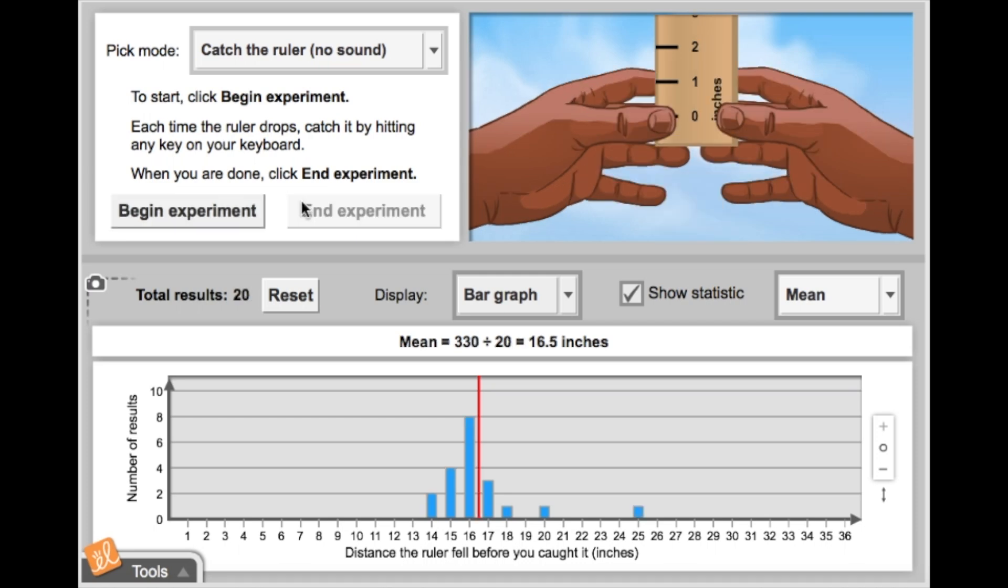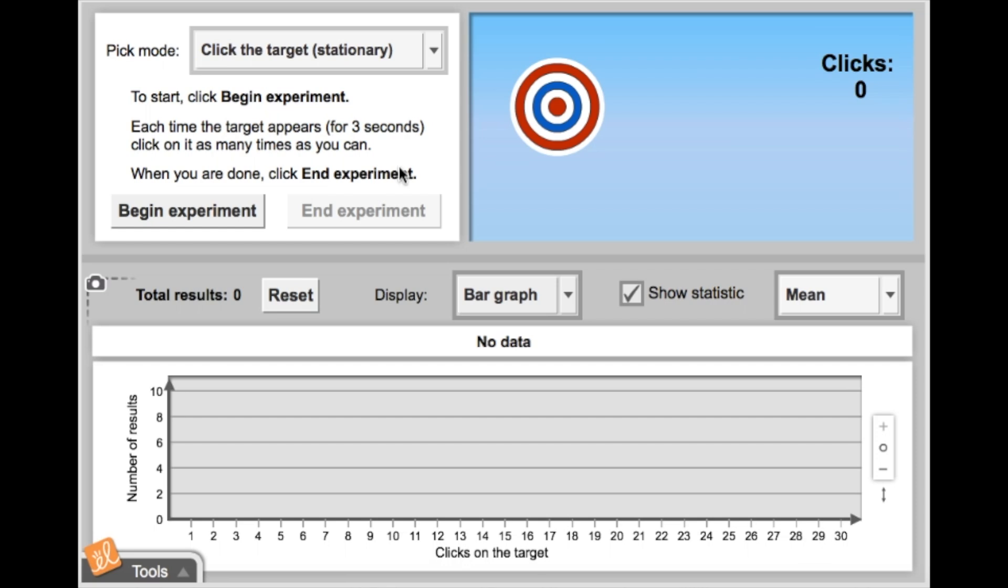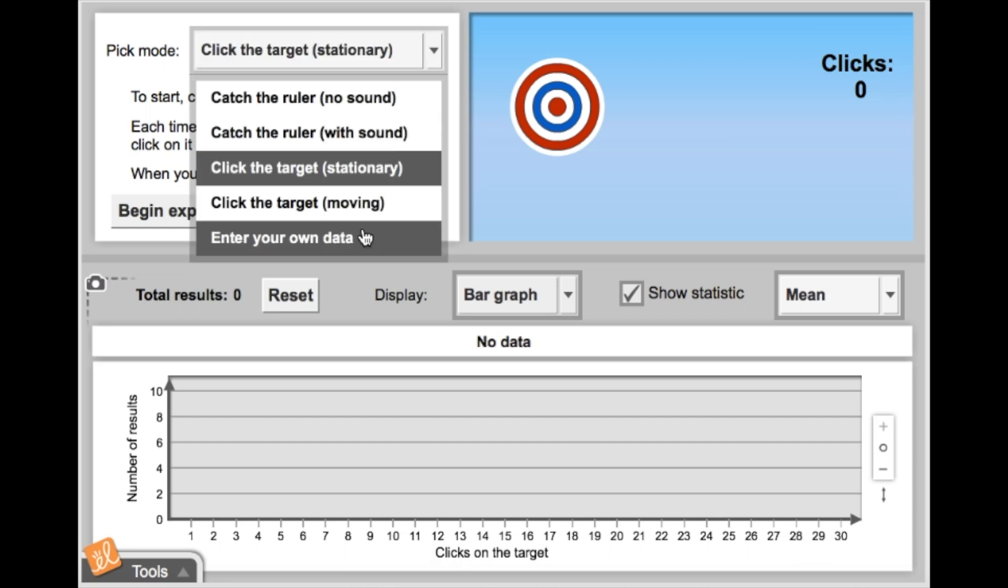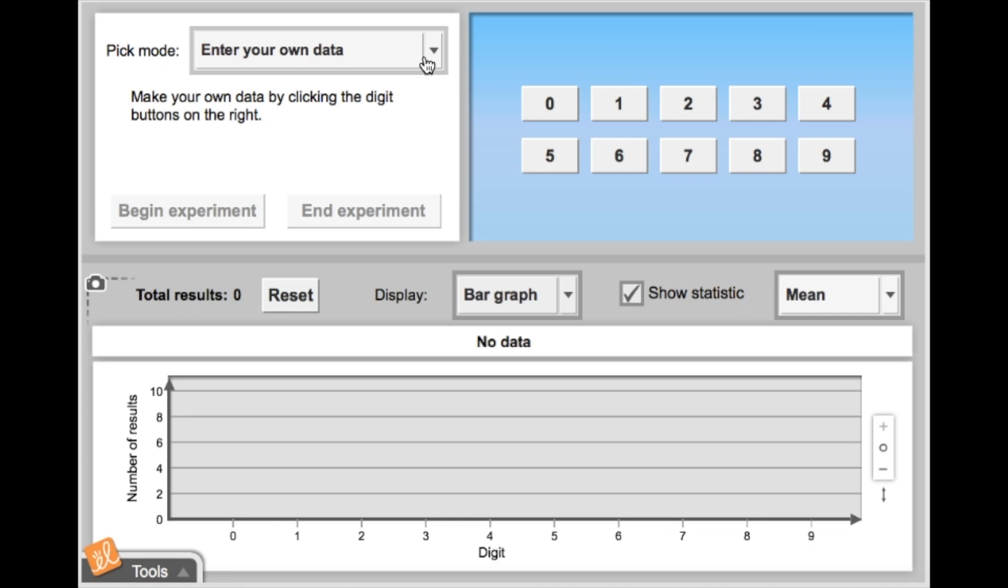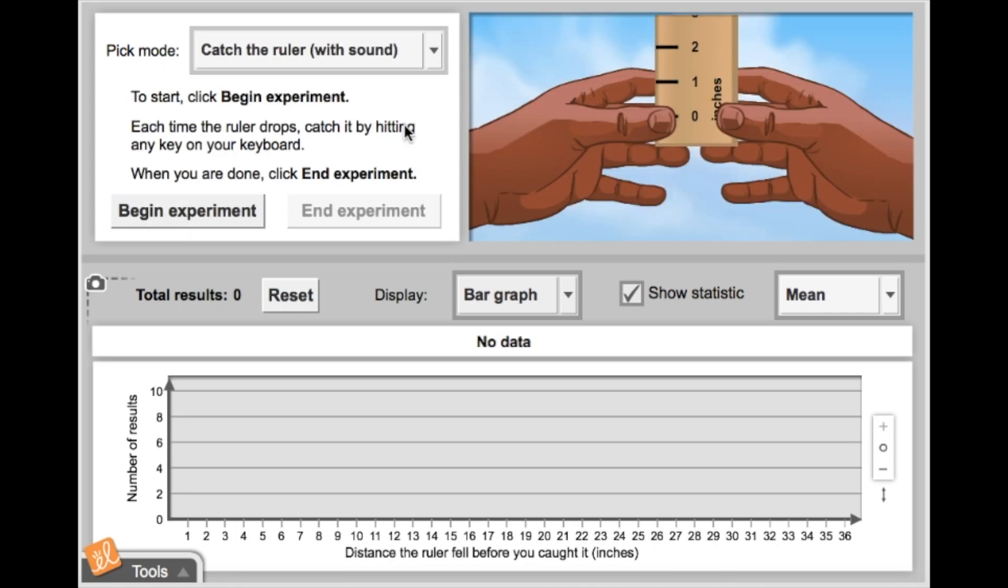Curious to test your reaction time with other items? Simply click Reset and then pick a mode from the dropdown and choose from rulers, targets, or even entering your own datasets. Did you also see that there's an option to test rulers with sound? That would be a great point of comparison.